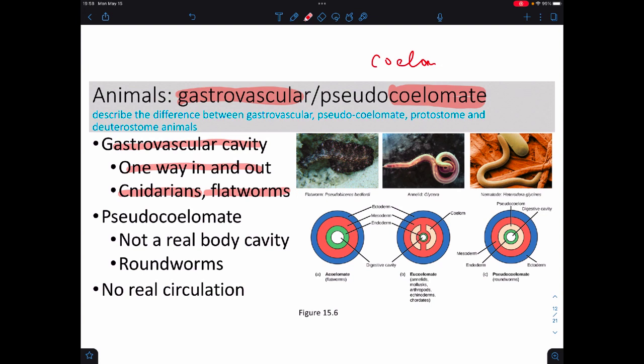So, gastrovascular cavities are one way in and one way out. So, these would be things like cnidarians and flatworms, because if you have a sea jelly, there's one way in and one way out. So, that seems easy enough. Flatworms are kind of gross.